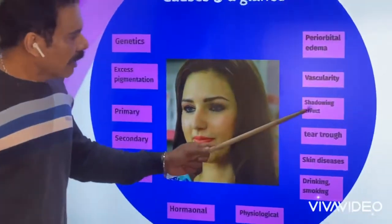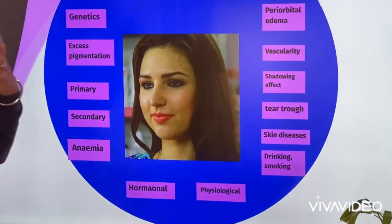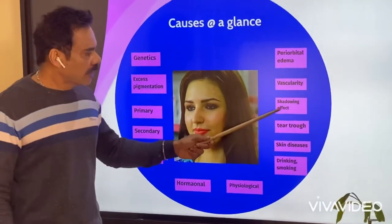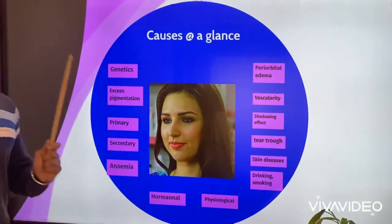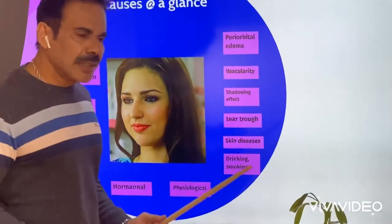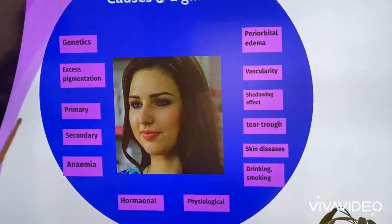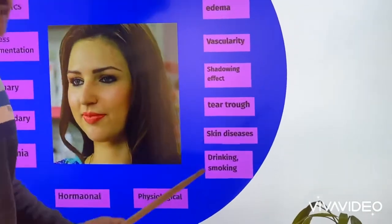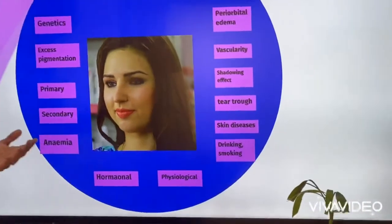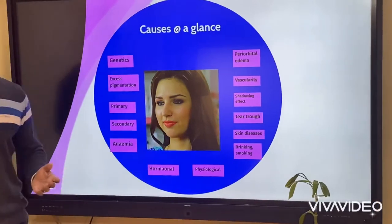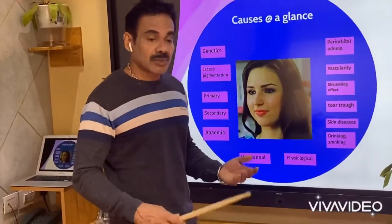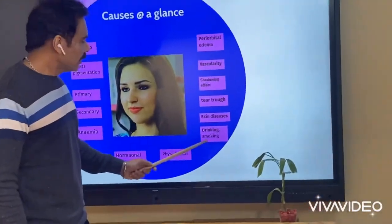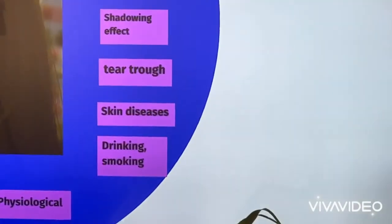There is also a shadowing effect - when you have hollow eyes, loose skin, or become thin, that gives a shadowing effect appearing like a tear trough. Tear trough can be genetic or caused by increased eye straining, or with aging through loss of fat and muscle strength. Certain skin diseases like lichen planus or lichen planus pigmentosus, allergies, contact dermatitis, asthma, excessive drinking, and smoking can also give rise to under-eye pigmentation.